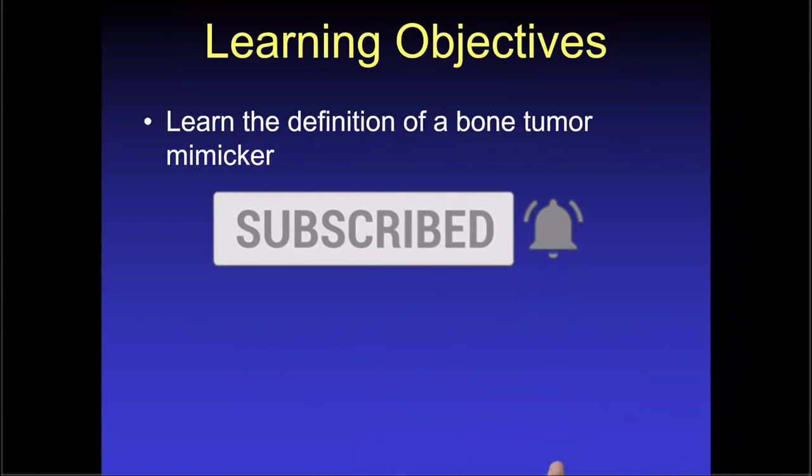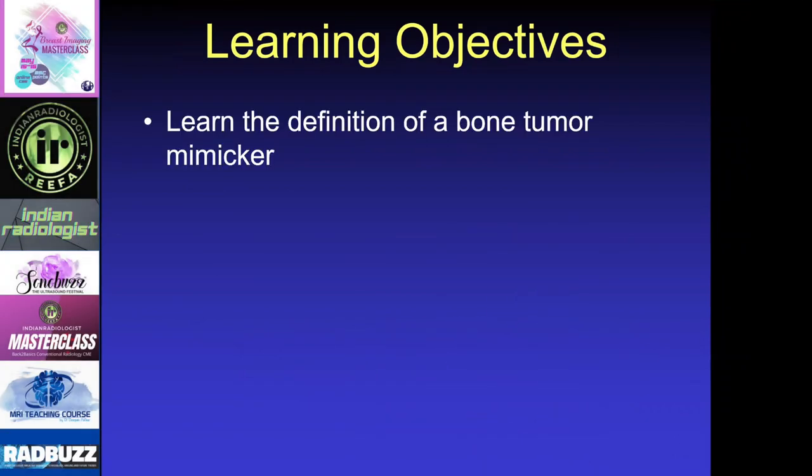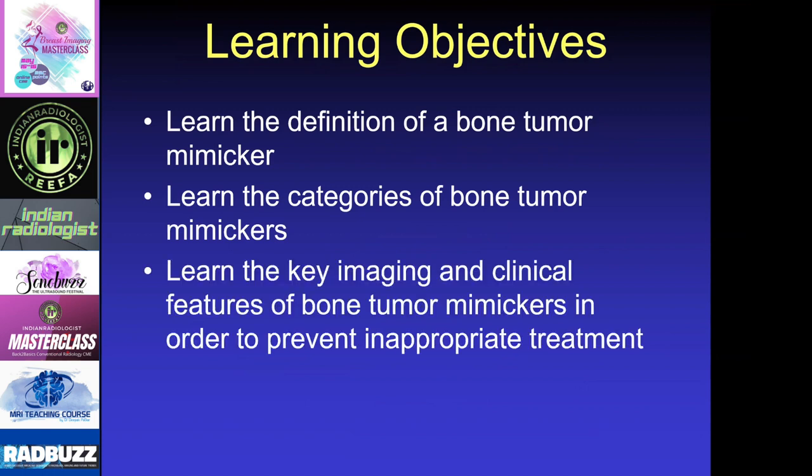Our learning objectives are to first learn the definition of a bone tumor mimicker, learn the various categories of bone tumor mimickers, and then learn the key imaging and clinical features of these bone tumor mimickers in order to prevent inappropriate treatment.